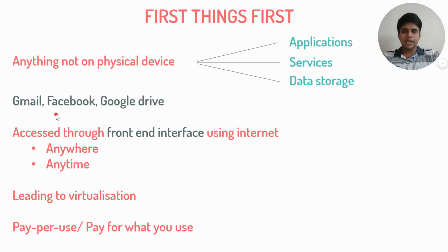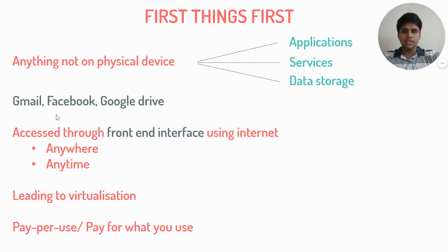How do we access Gmail? We access Gmail through the internet through a front-end web application on our laptops. The data storage and the application are not hosted on the local drives of our laptops. On the contrary, traditional applications such as Microsoft Excel or Microsoft Word have both data storage and applications on our local systems. This is the primary difference between traditional computing and cloud computing.